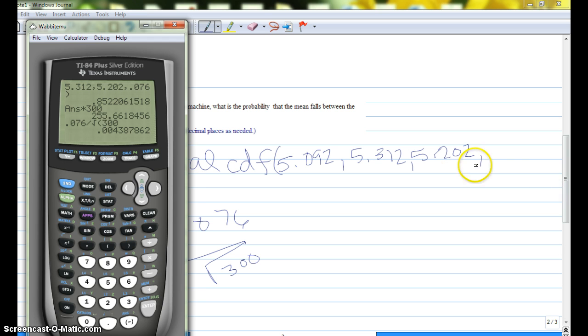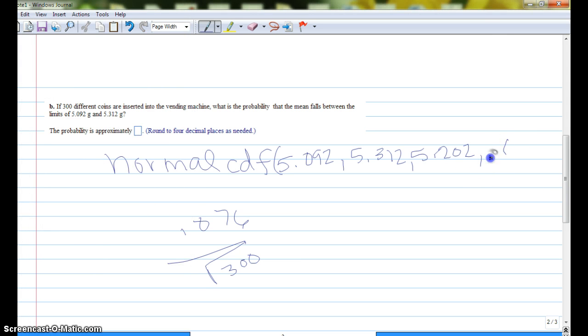So 0.0044. Okay, so then you'll put that in your calculator to get that probability. Okay, so I'll let you figure out part C on your own, and let me know if you have any questions.